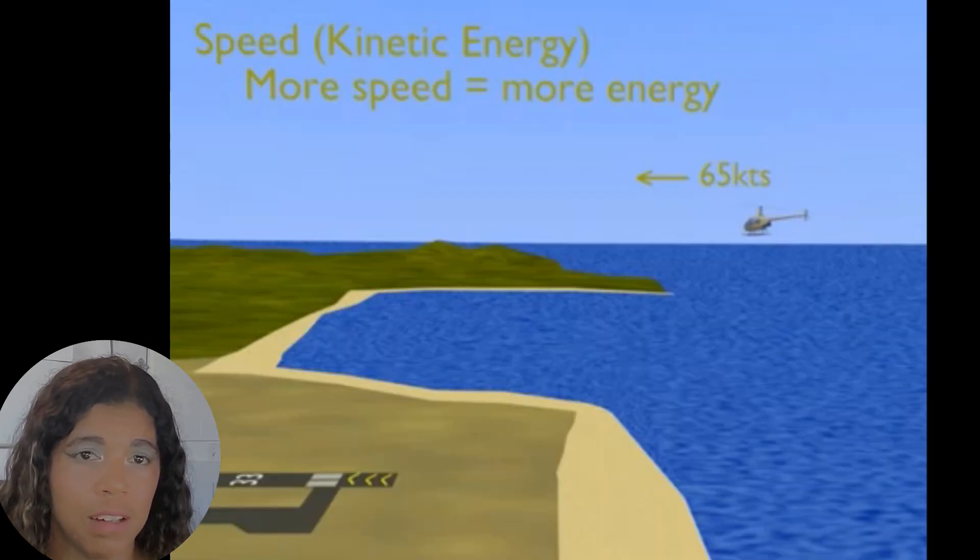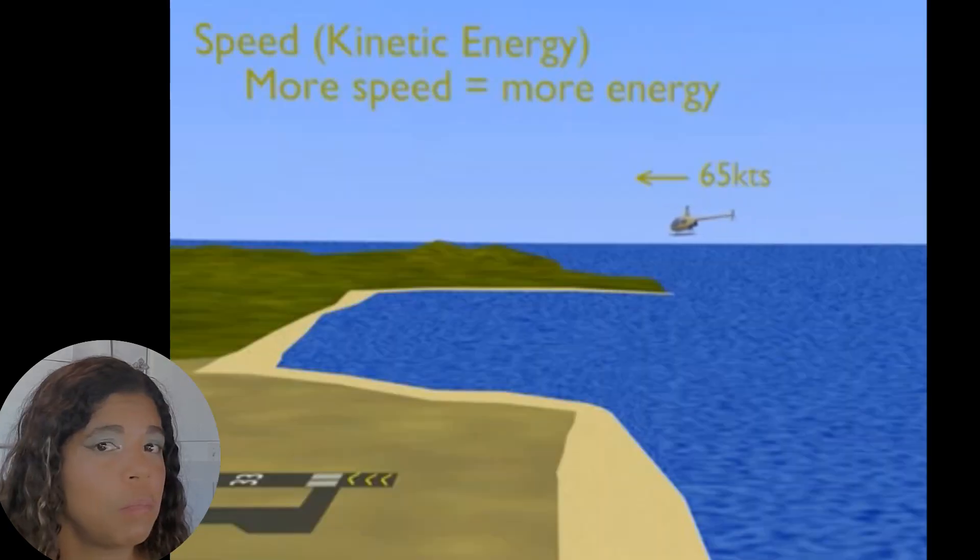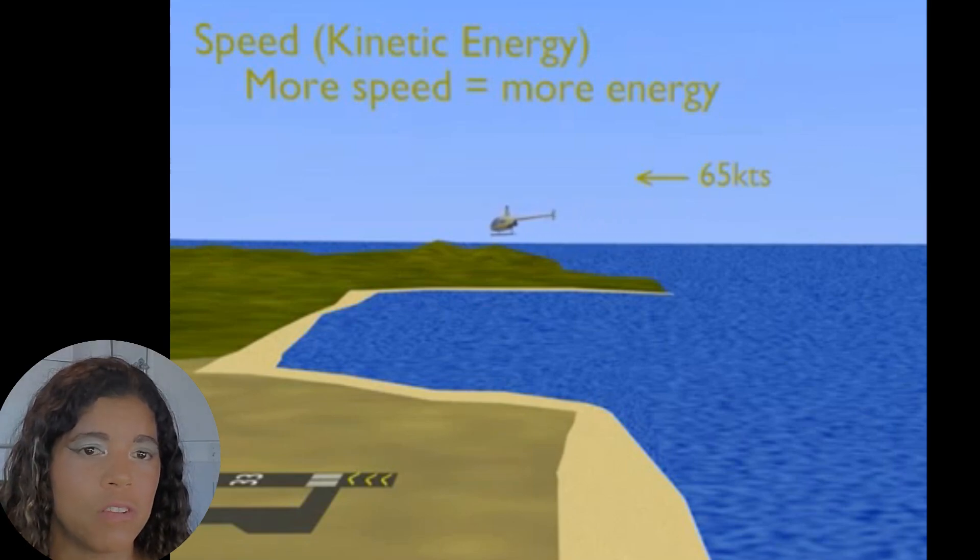The forward speed of the helicopter, kinetic energy. More speed means more energy. 65 knots contains a pretty good amount of energy to fly with.